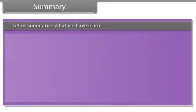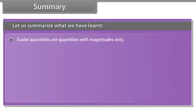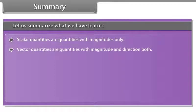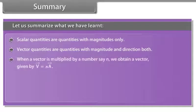Summary. Let us summarize what we have learnt. Scalar quantities are quantities with magnitudes only. Vector quantities are quantities with magnitude and direction both. When a vector A is multiplied by a number say n, we obtain a vector V given by V vector equals N into A vector.